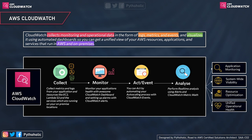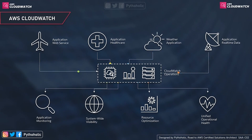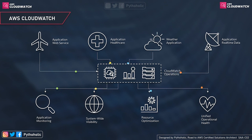These four pillars — Collect, Monitor, Act, and Analyze — help you in application monitoring, system-wide visibility, resource optimization, and unified operational health. This is just the tip of the iceberg; CloudWatch is much more when you use it effectively. No matter what kind of application you're working with or what region it belongs to, you get the facility to create log streams and send application and resource logs to CloudWatch so that you can analyze the metrics and logs and act quickly to resolve issues.